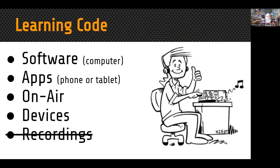There are a number of different ways you can learn the code: software for your computer, apps for your phone, on-air classes, code training devices, and in the olden days people used recordings — originally on LPs, then cassette tapes, then DVDs. I never saw an 8-track code tape, but there probably were some. The problem with any recording is your brain very quickly memorizes the small amount of material on it, and then you're testing your memory rather than your current code skills.